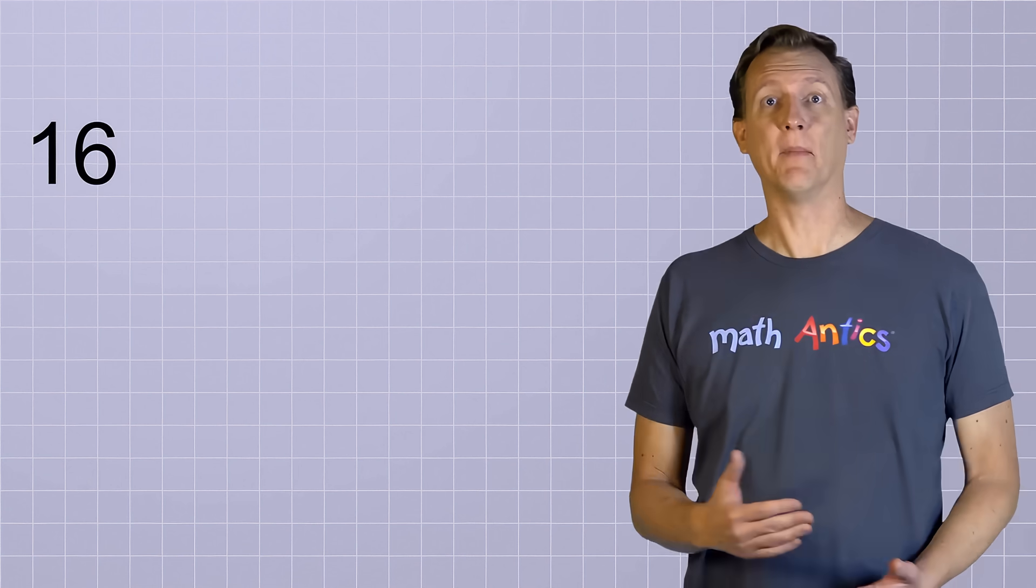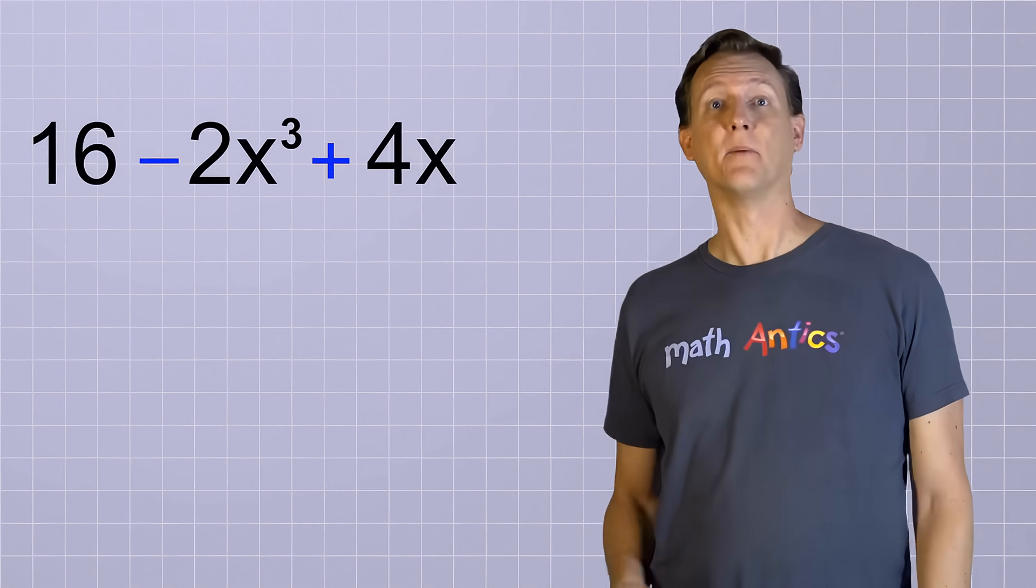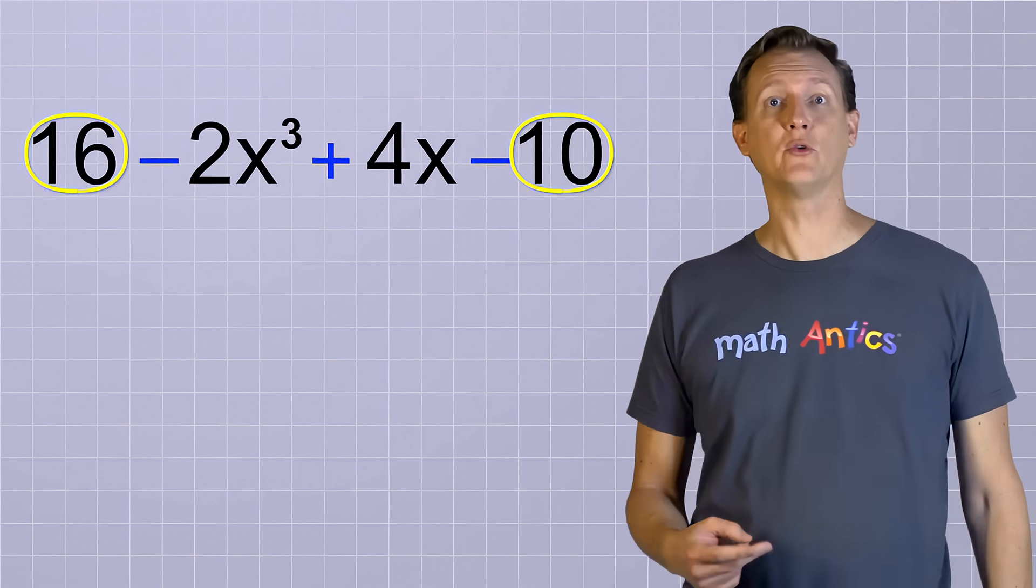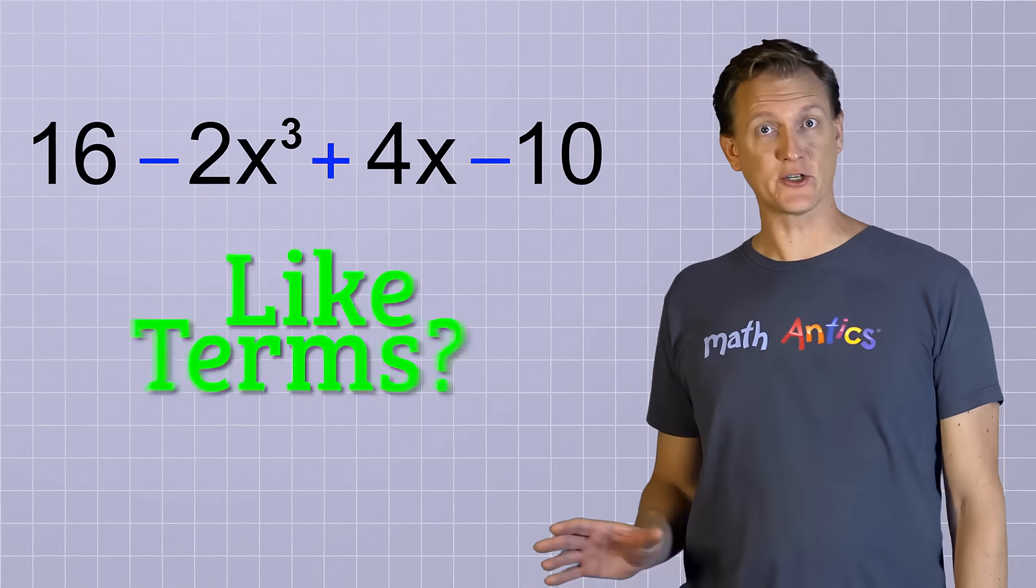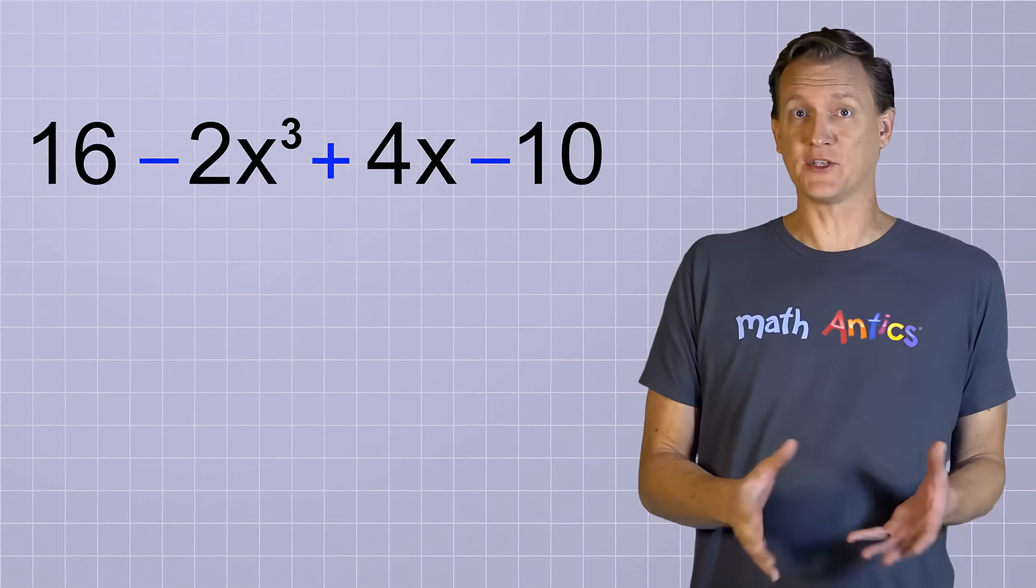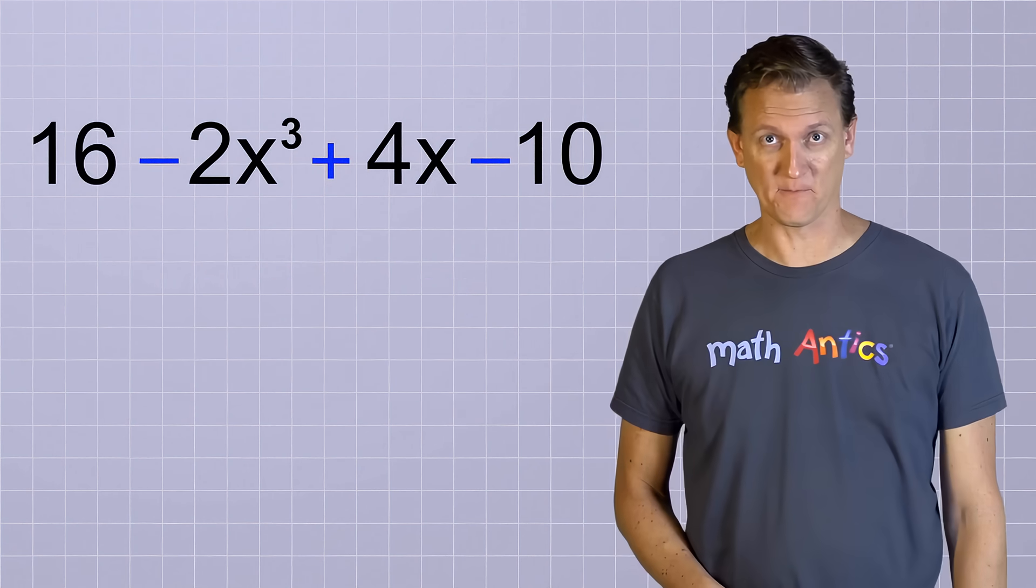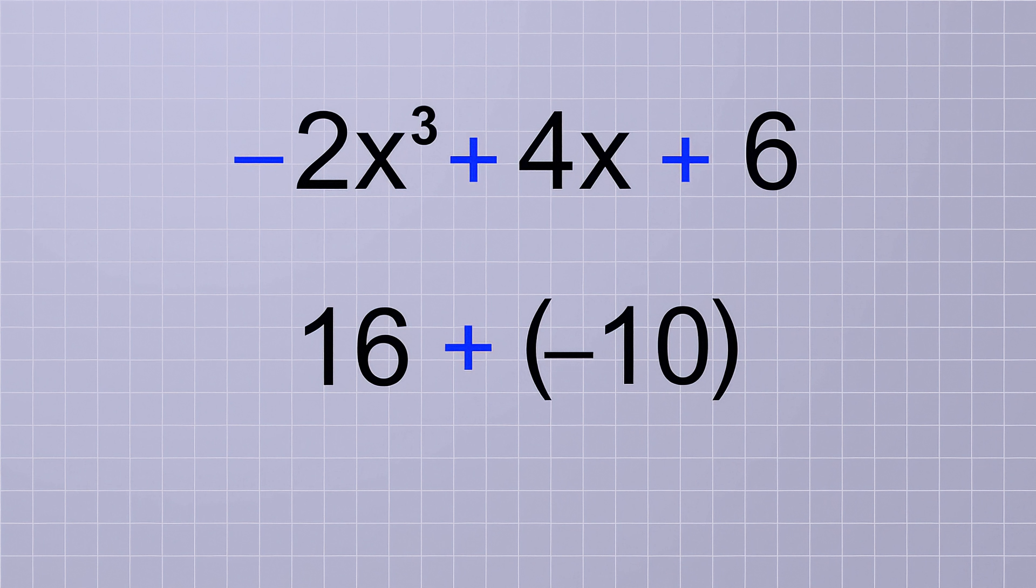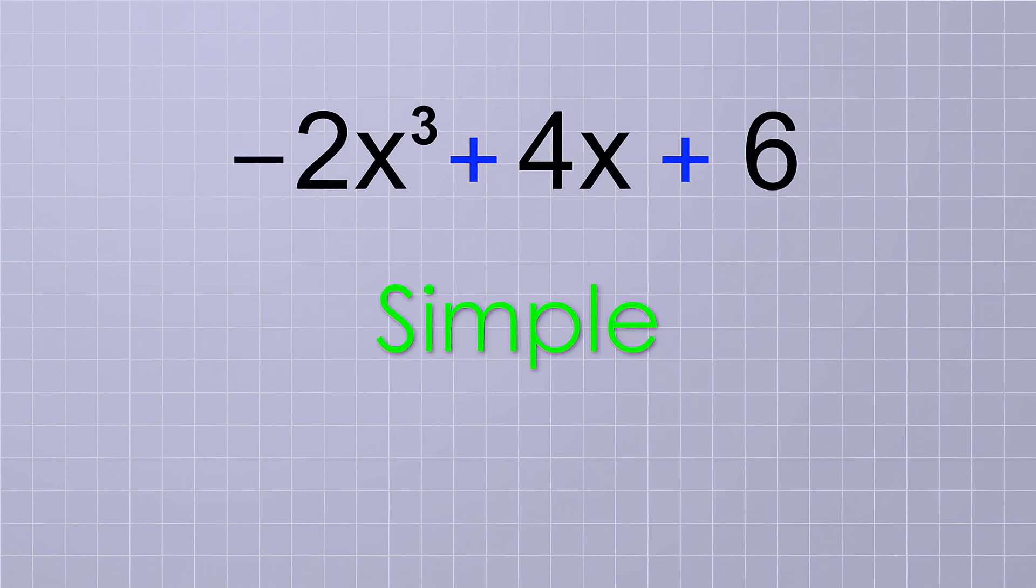Let's try this one. 16 minus 2x cubed plus 4x minus 10. In this polynomial, we have a third degree term, a first degree term, and two constant terms. Are those constant terms like terms? Absolutely! They're both just numbers and don't really have a variable part, so we can combine them easily. This term is positive 16 and this term is negative 10. So if you add them together, you end up with positive 6. Remember, it's best to think of all terms in a polynomial as being added, but they can have coefficients that are either positive or negative. That's why this negative sign stays here with the 2x cubed term, because it's a negative term. So this polynomial is now as simple as it can be since there's no other like terms.